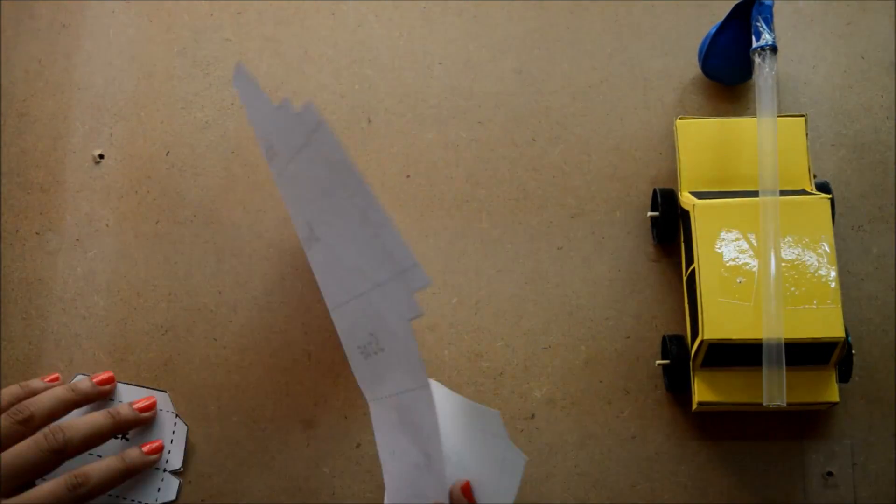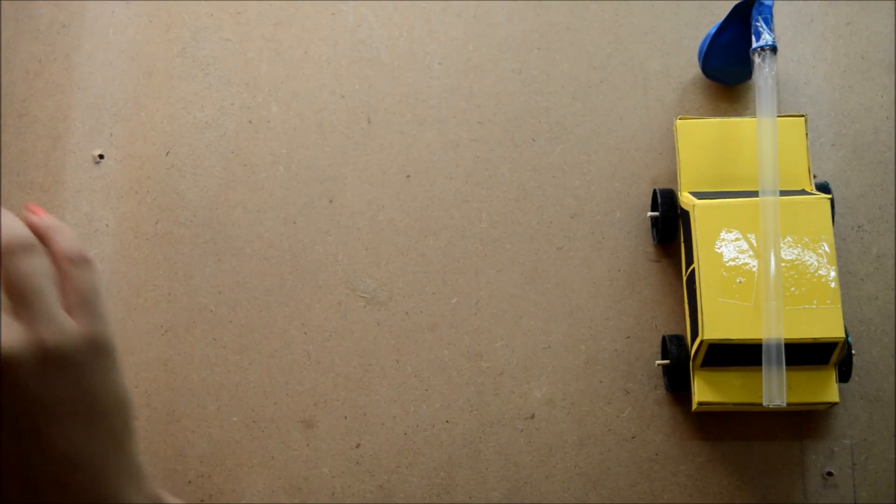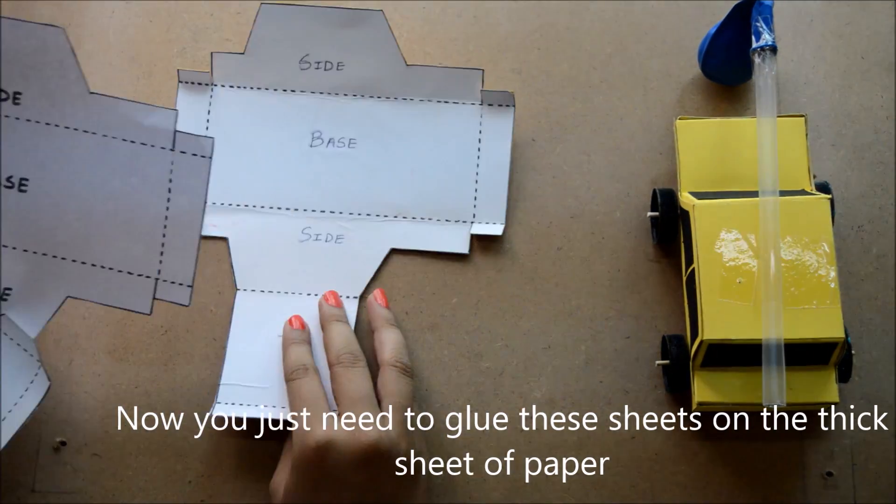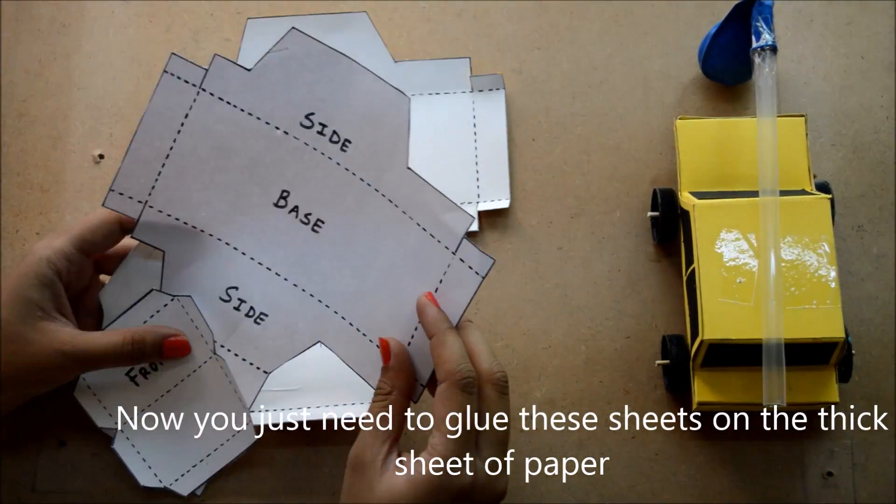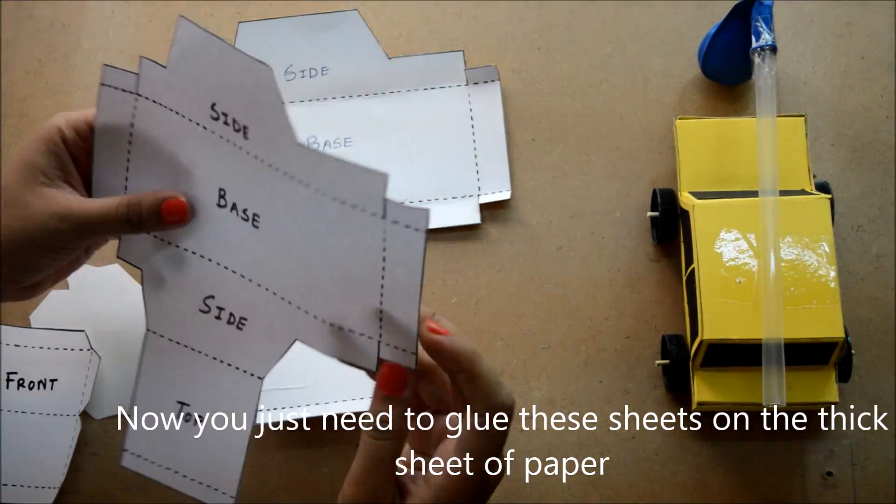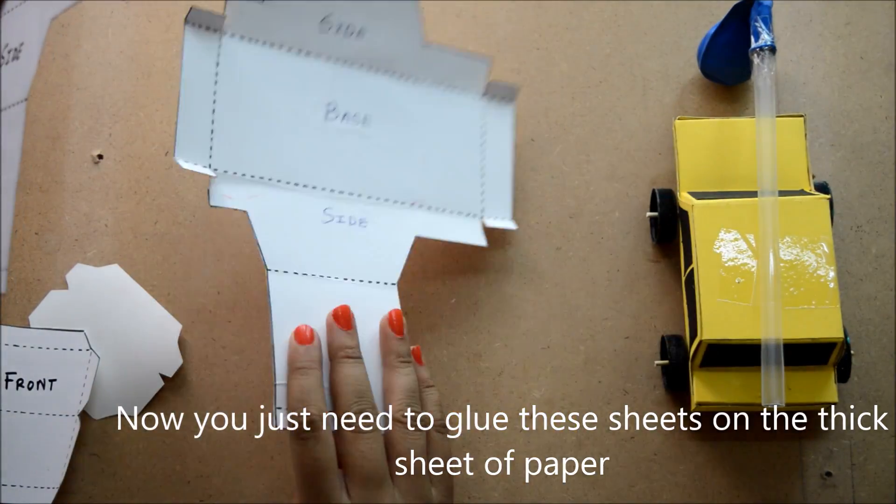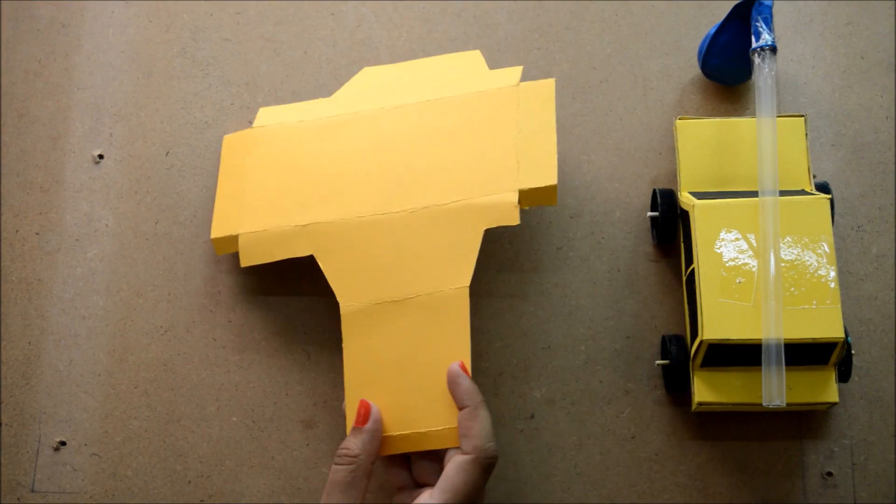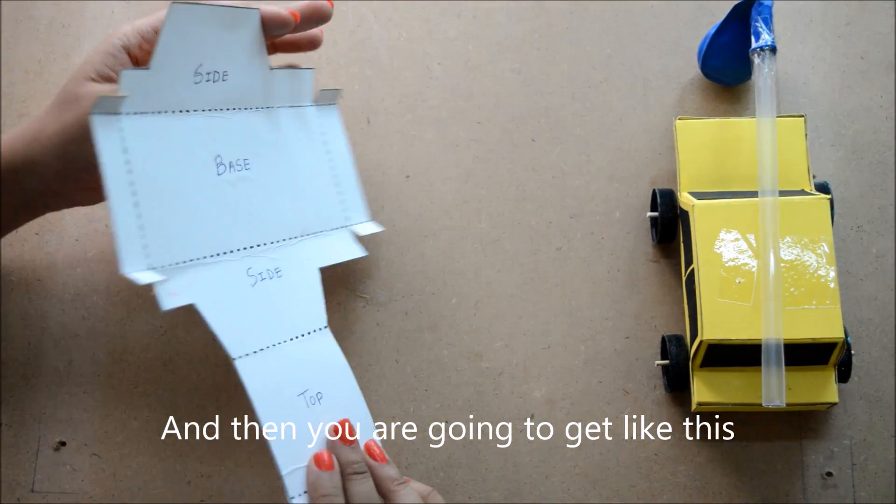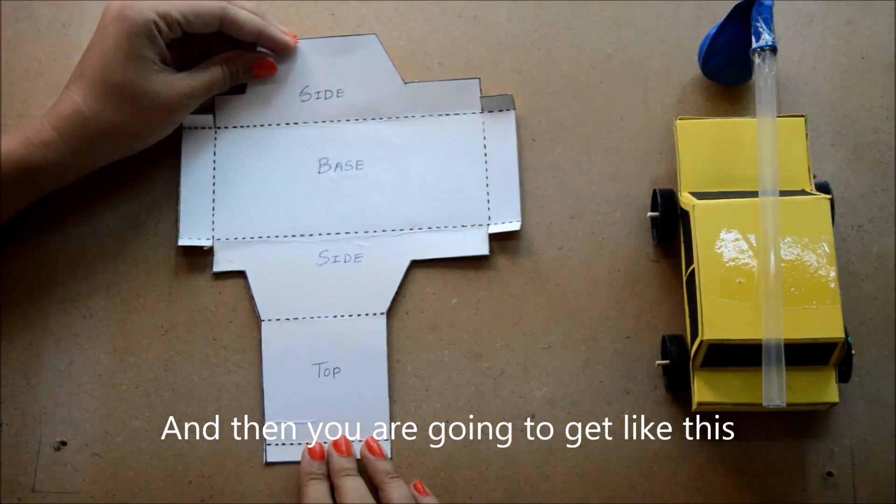Now you just need to glue this sheet on the thick sheet of paper and then you are going to get like this.